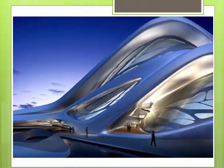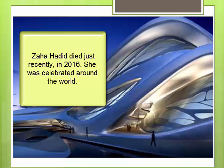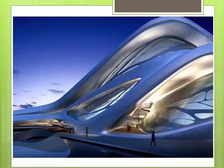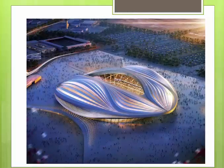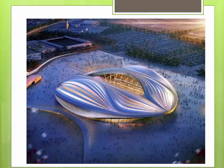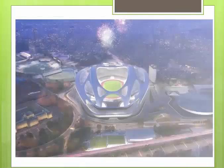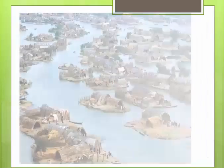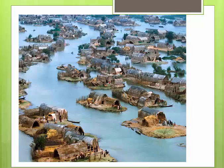We also see really innovative work in architecture. One of the most world-renowned architects today is an Iraqi-born architect named Zaha Hadid. She was born in Iraq, but during her childhood she and her family moved to London, where she built her career. Her architecture is known for organic shapes and curvaceous swooping lines. She has designed many famous buildings, including the aquatic center for the Olympic Games held in London.